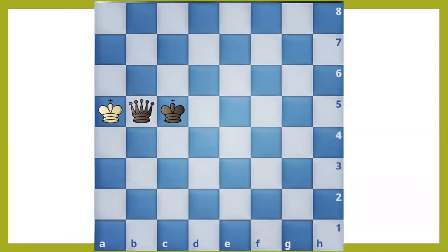Similarly, another example. In that particular example, black's queen has checkmated white's king.